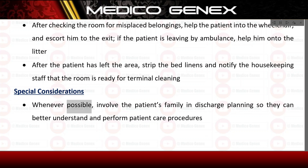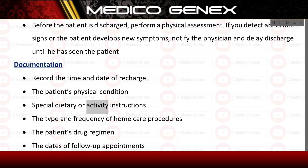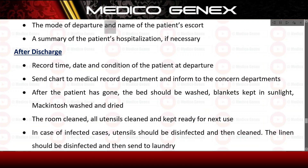Special Considerations: Whenever possible, involve the patient's family in discharge planning so they can better understand and perform patient care procedures. Before discharge, perform a physical assessment. If abnormal signs are detected or the patient develops new symptoms, notify the physician and delay discharge until the patient has been seen. Documentation: Record the time and date of discharge, the patient's physical condition, special dietary or activity instructions, the type and frequency of home care procedures, the patient's drug regimen, dates of follow-up appointments, the mode of departure and name of the patient's escort, and a summary of hospitalization if necessary.